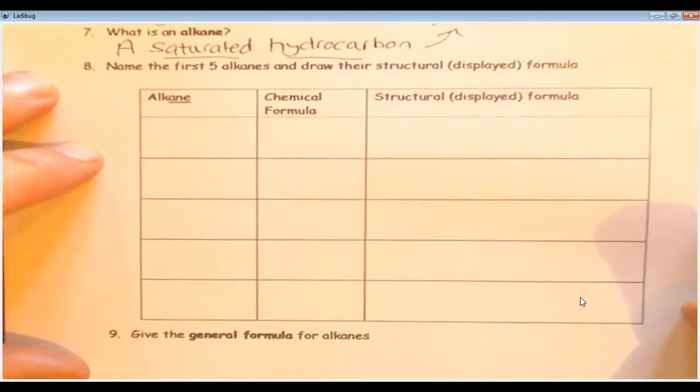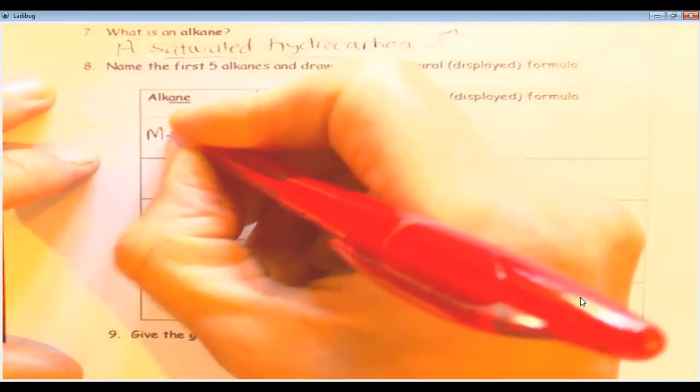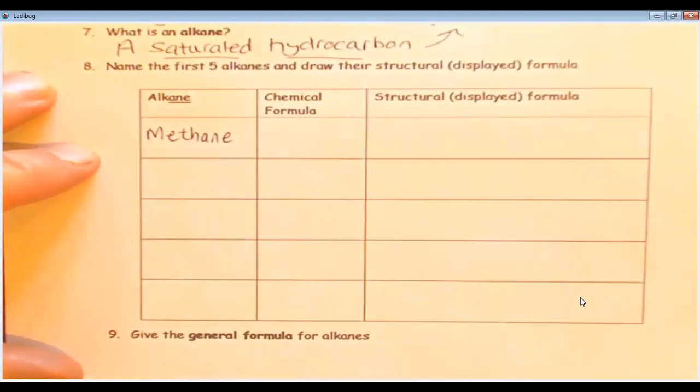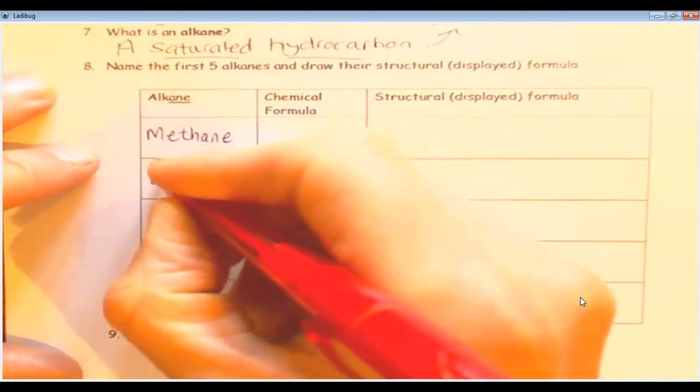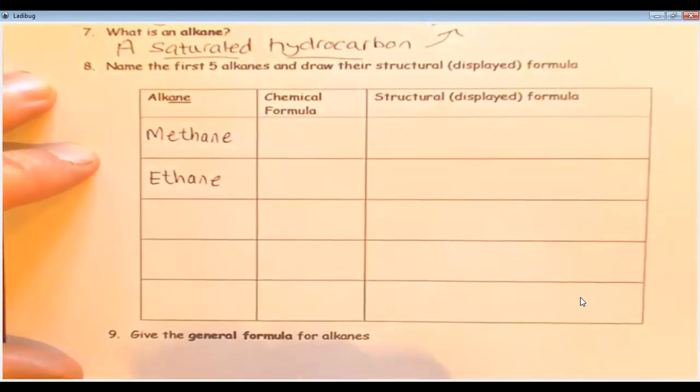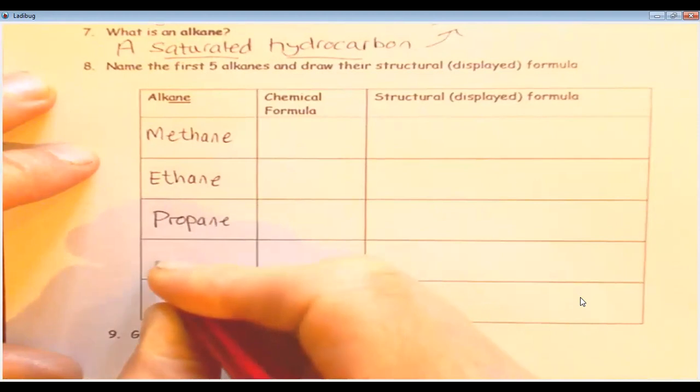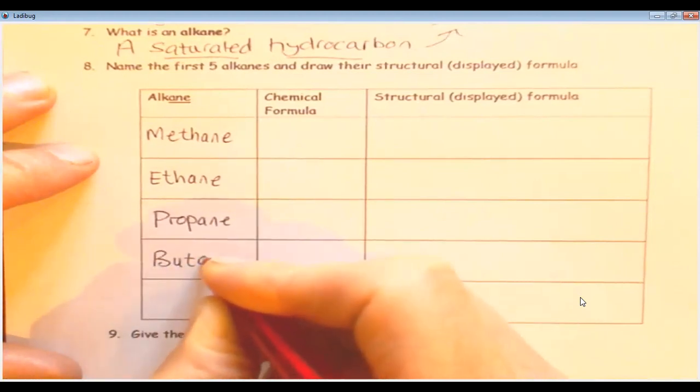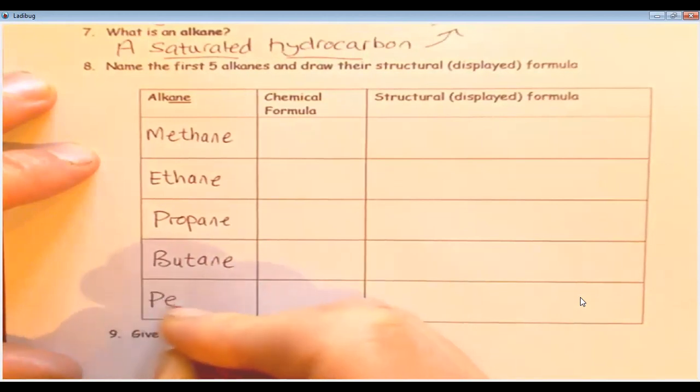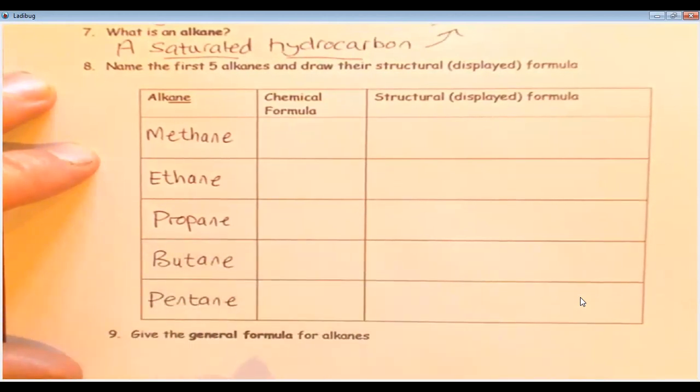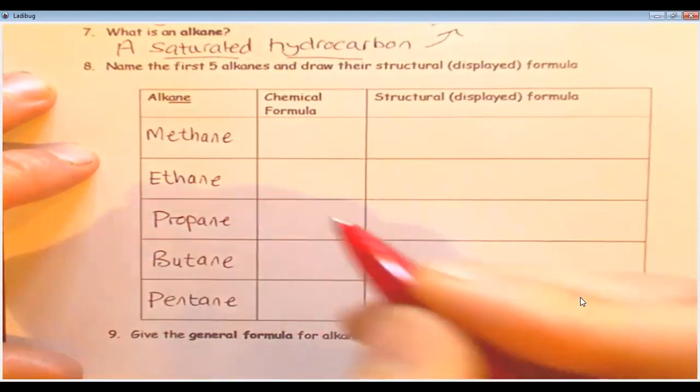Okay, so now we're going to have a look at these alkanes. Now it says here, name the first five alkanes and draw their structural displayed formula. And I'll show you what that means. Now the first five alkanes are called methane, which you've probably heard of. Then we've got ethane, propane, butane, and pentane.